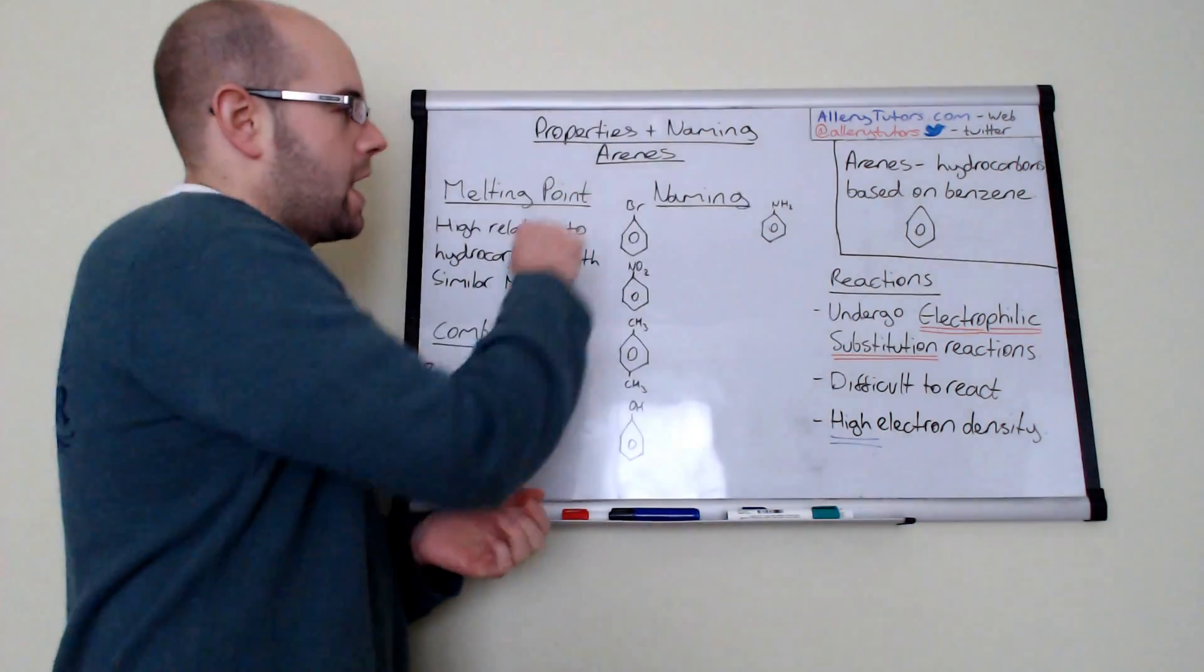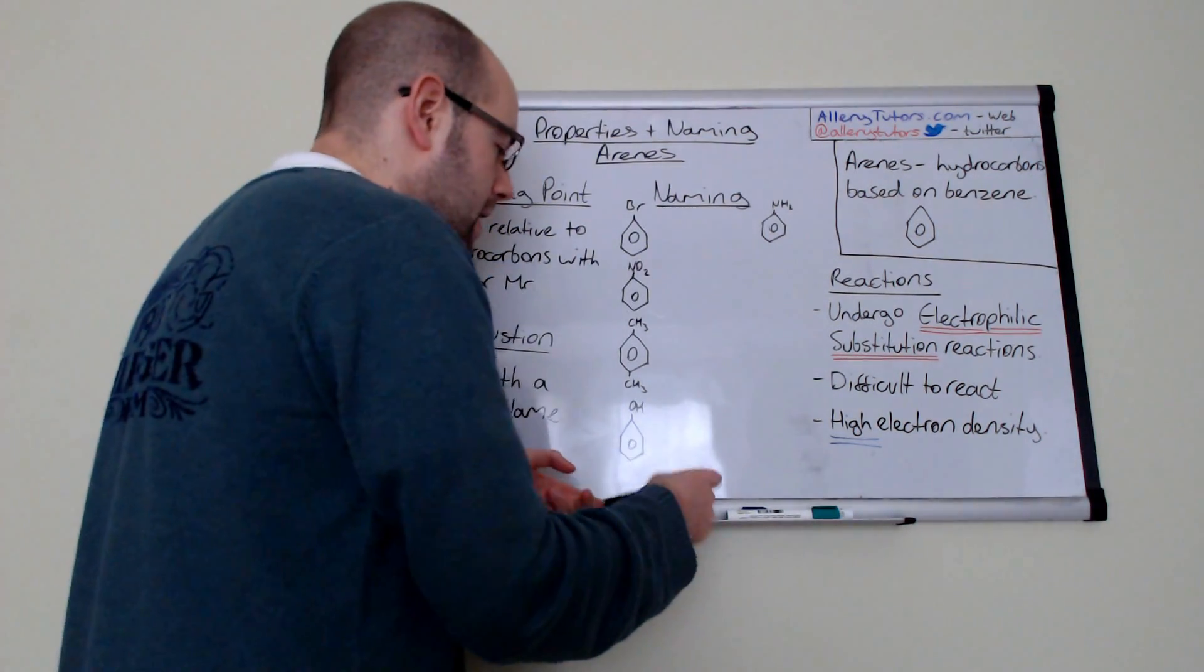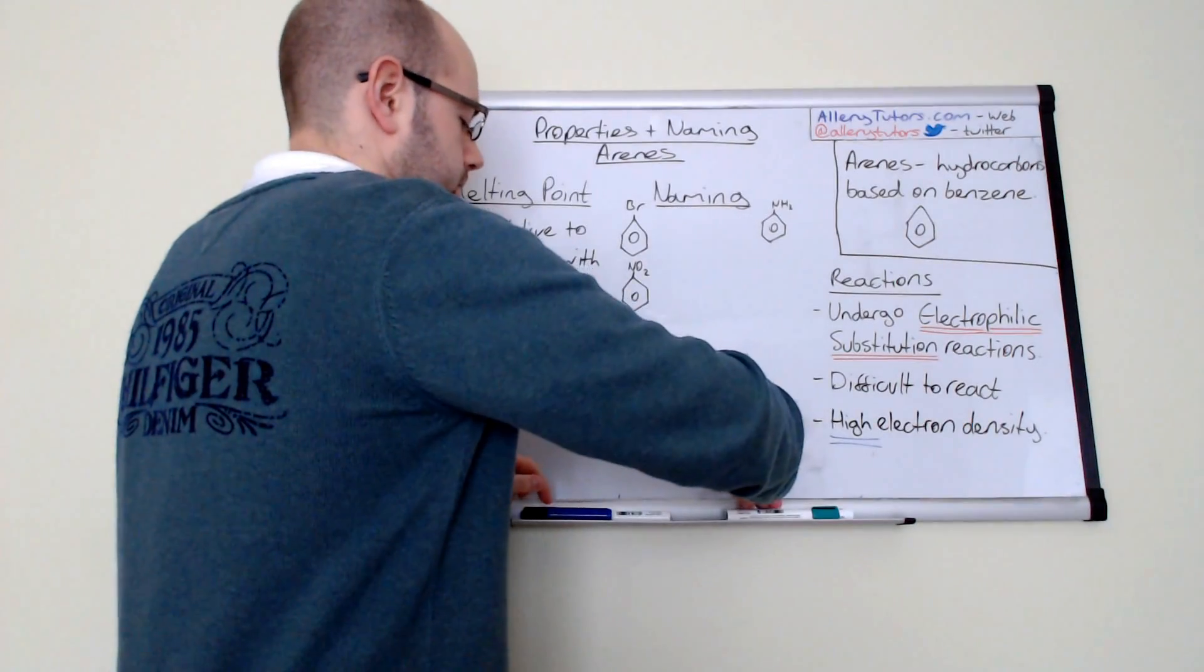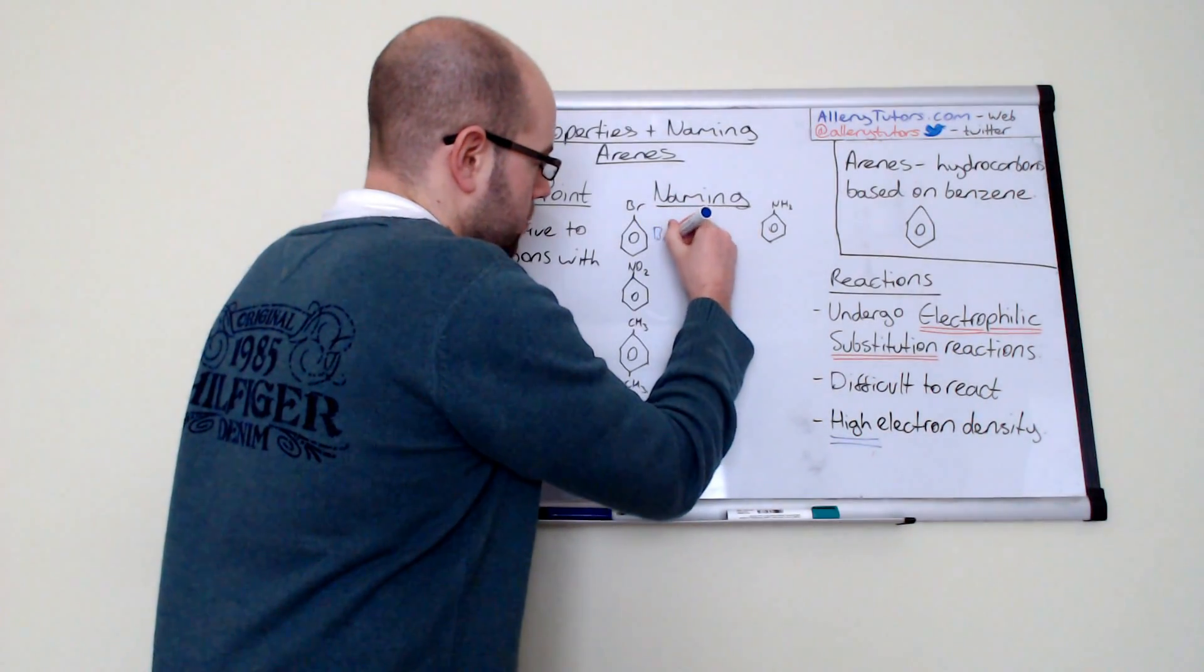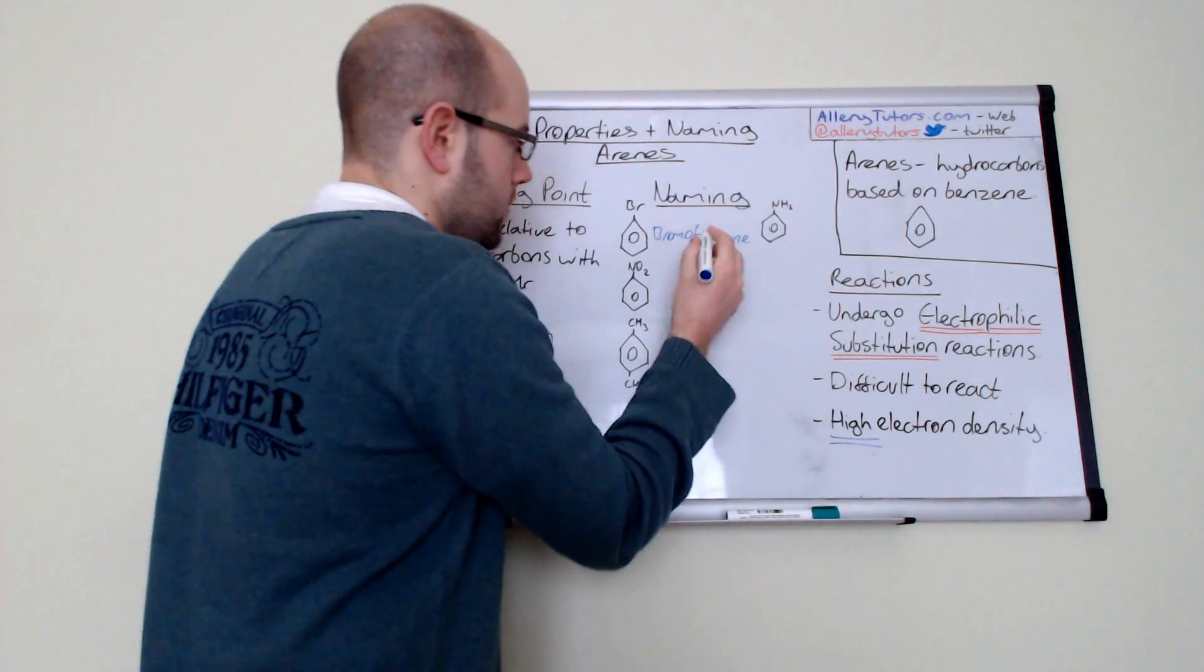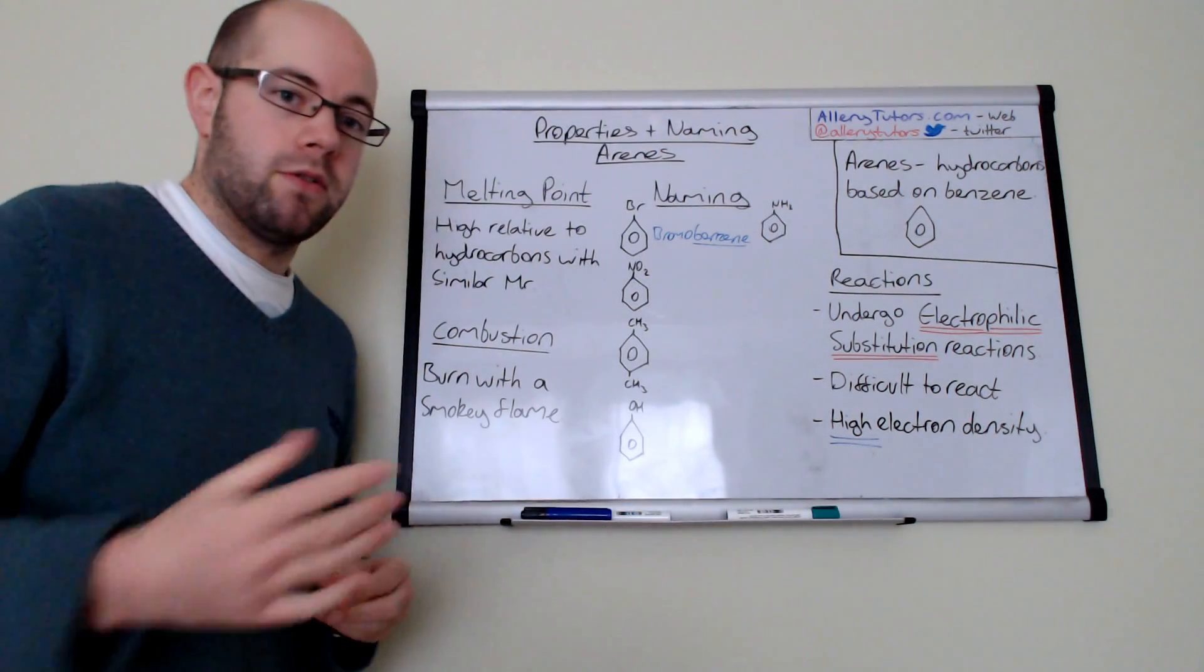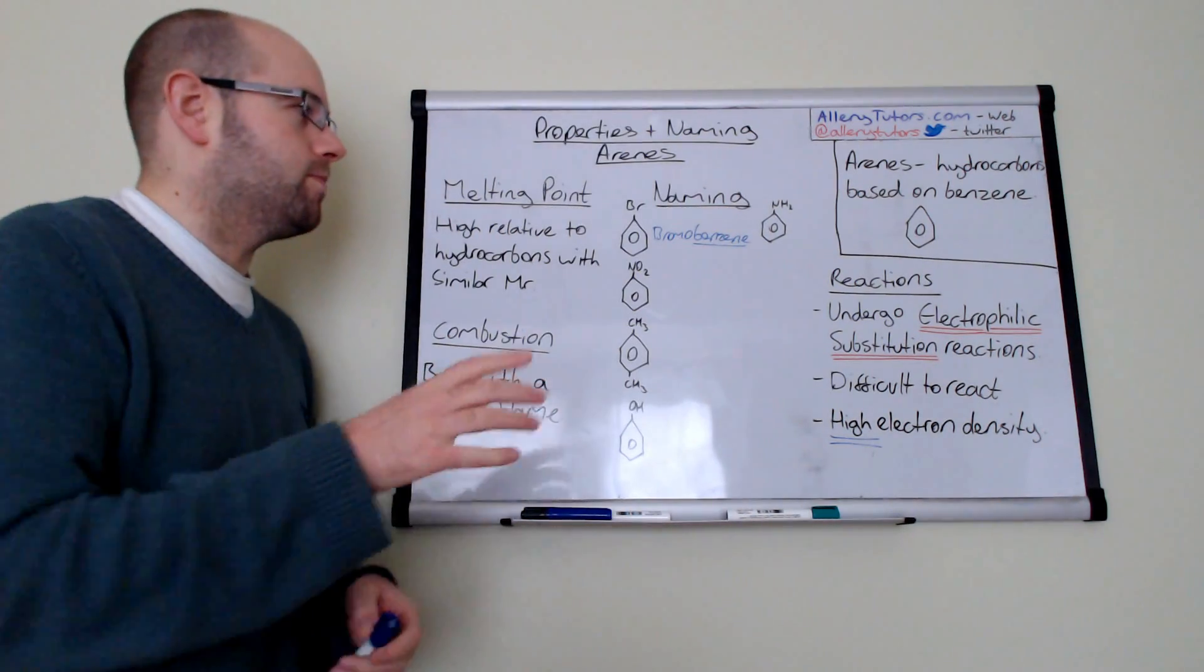This one has got a halogen on there - in this case you put bromine on the top there and we've got a benzene ring. In terms of naming that, we're going to call that bromobenzene. You put the halogen first, so it's bromo and then benzene. You put benzene on the end and you just say what the halogen is. If that was chlorine, that would be chlorobenzene. If it was iodine, it would be iodobenzene. Very straightforward.